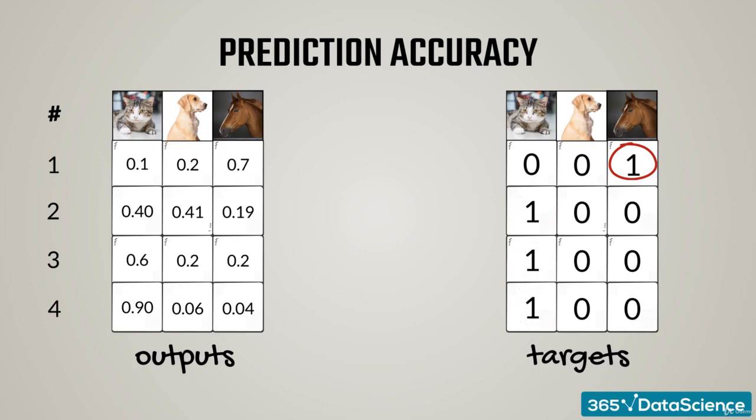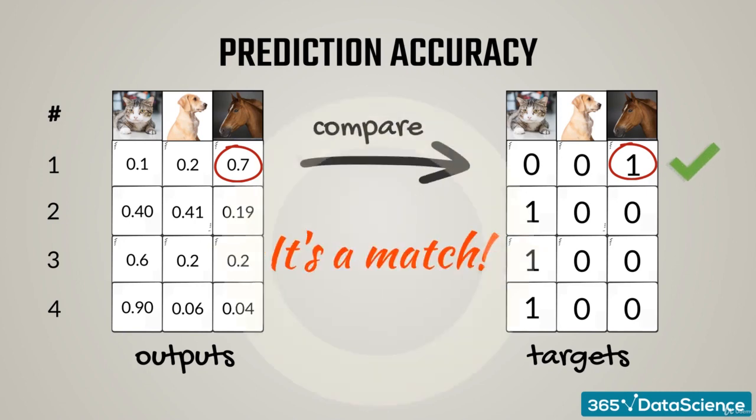According to a model, the first photo has 70% probability of being a horse. We have a match! That's correct. The model recognized the animal.